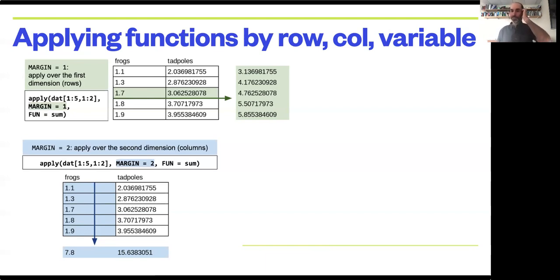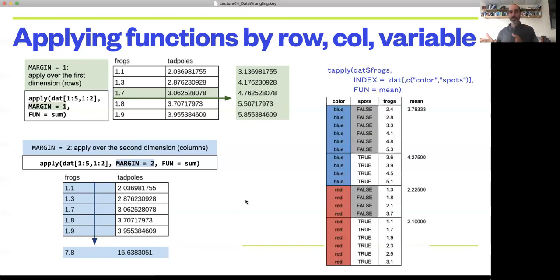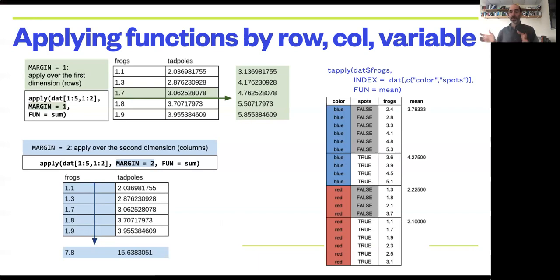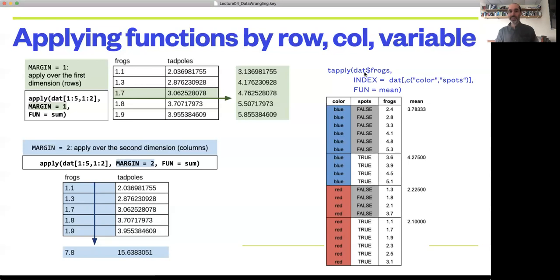The other thing that's often really common that you need to do when subsetting and working with data is you might be interested in applying a function, not by row or by column, but based on different groups that are in your other covariates. And so to do that, we can use what's called a tapply function. And the tapply is like the apply, in that the first argument is the data set you want to analyze. The third argument is the function you want to apply to it.